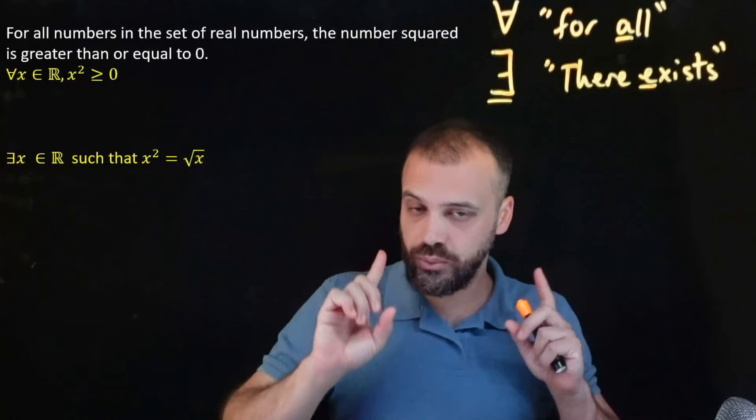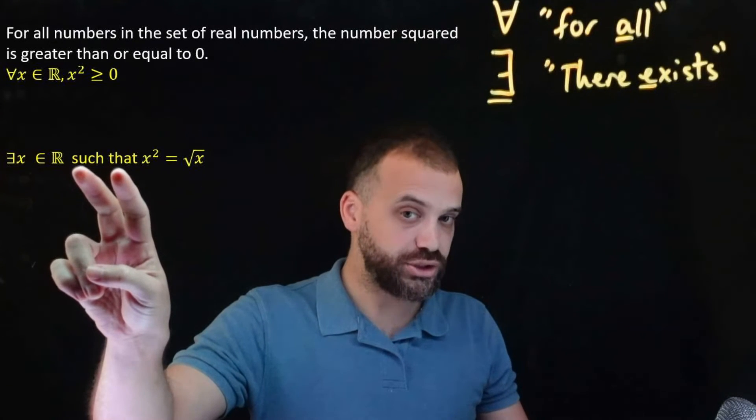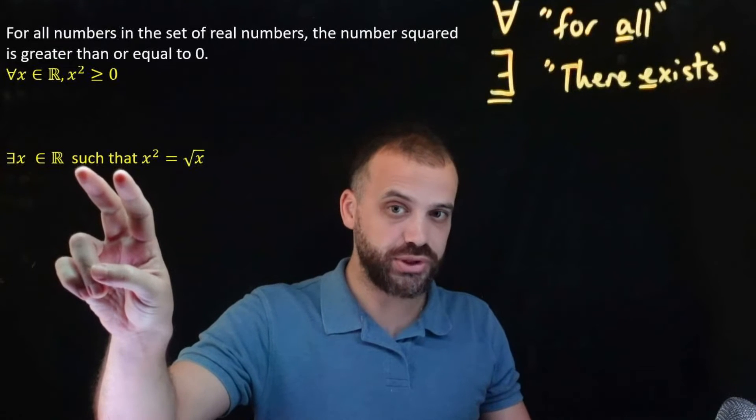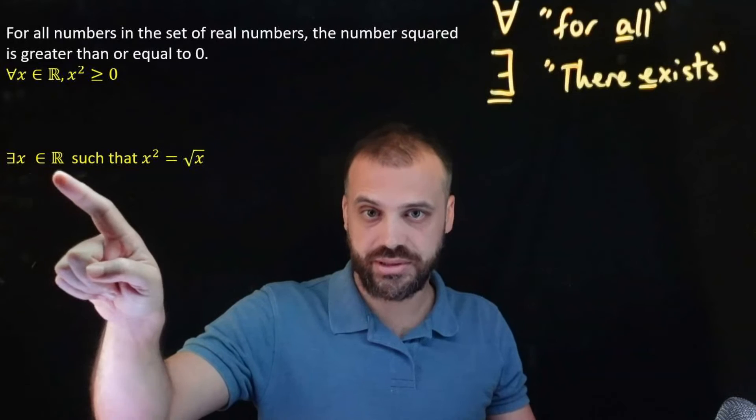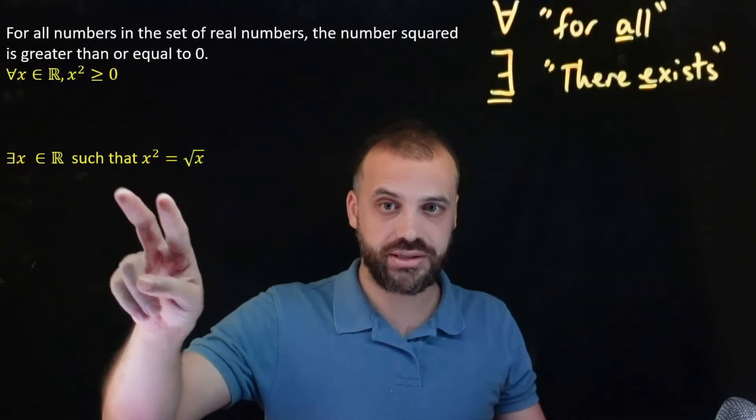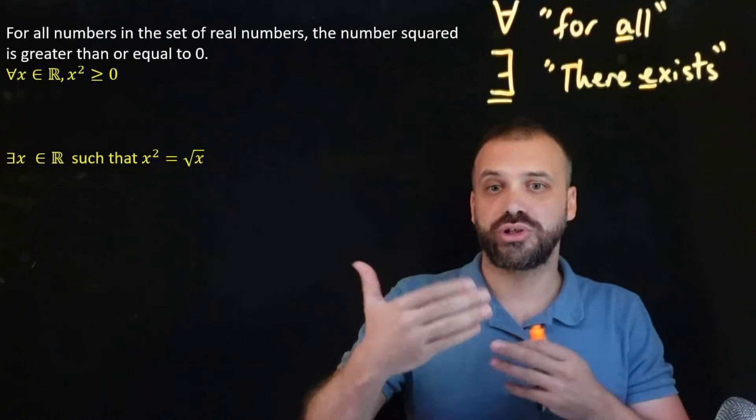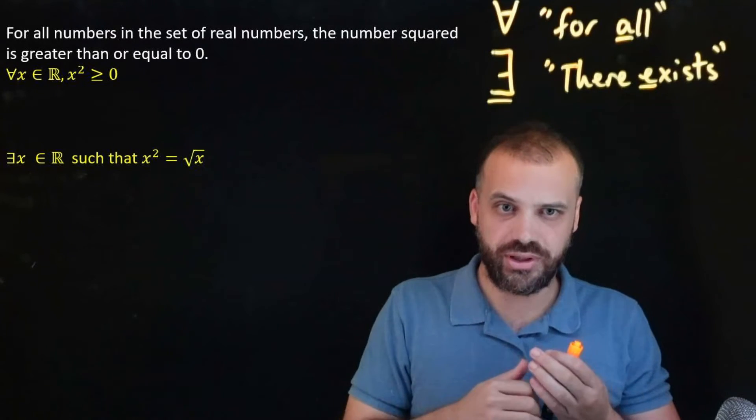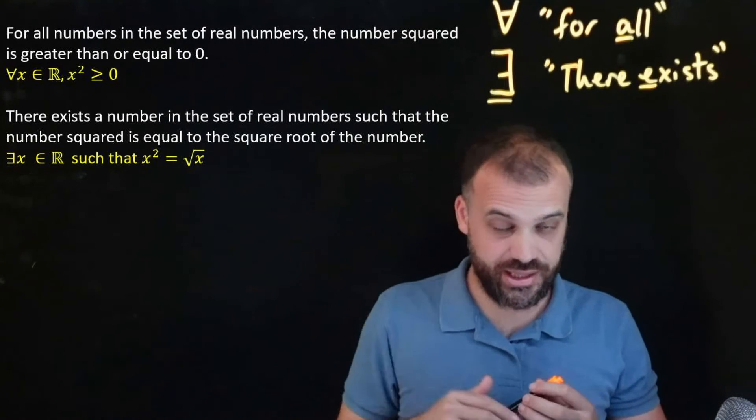Now I will say some people believe you probably don't need that 'such that' there. You could probably just say there exists a number in the set of real numbers, x squared is equal to root x. But let's keep the 'such that' there. We've got language, we're trying to communicate. It's a bit ambiguous as to whether you should put it there or not.